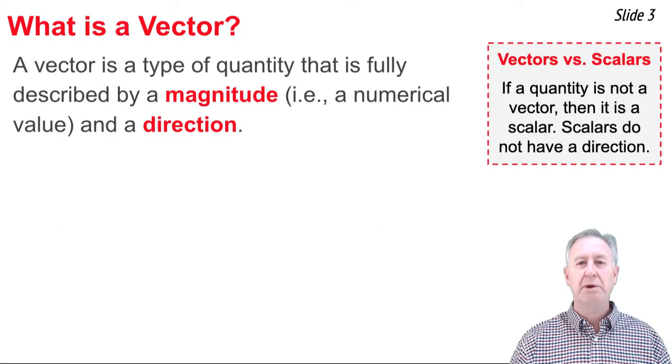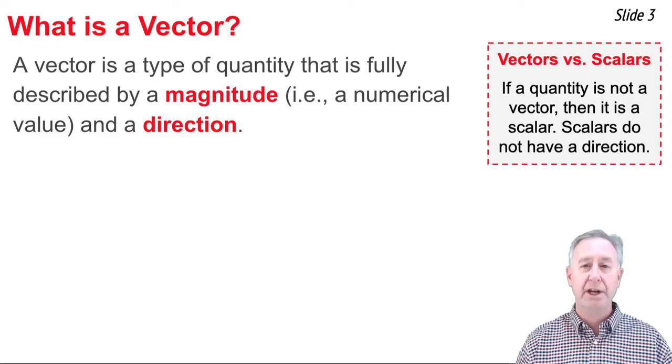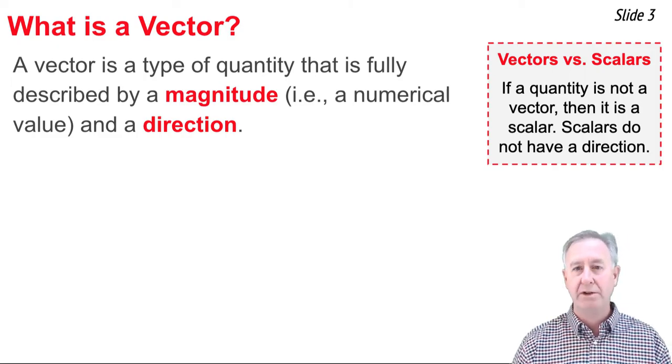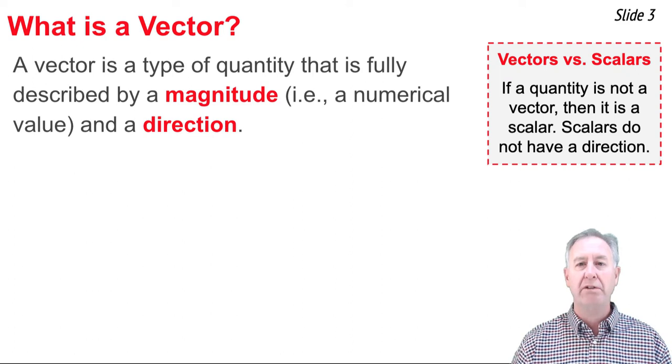The quantities that we will study in physics are either going to be vector quantities or scalar quantities. And here's the difference. A vector quantity is a quantity that is fully described by a magnitude and a direction. When we say magnitude, we mean a numerical value.